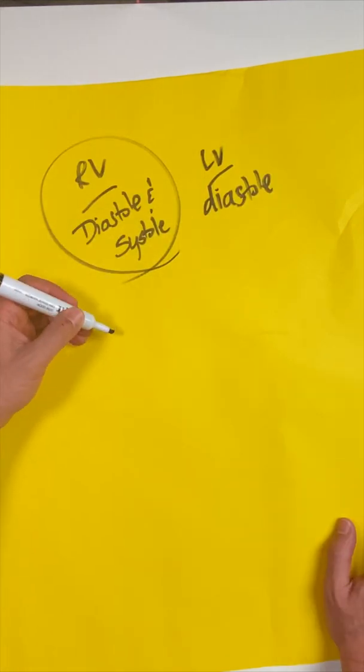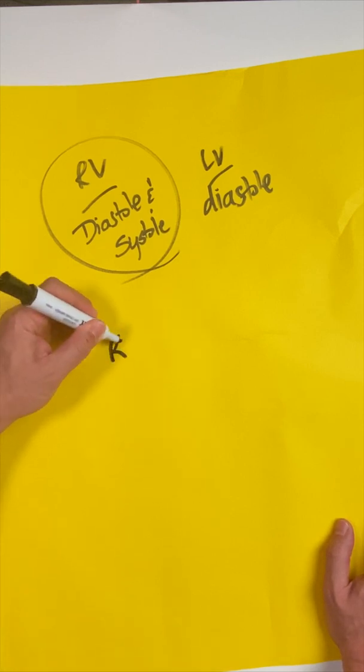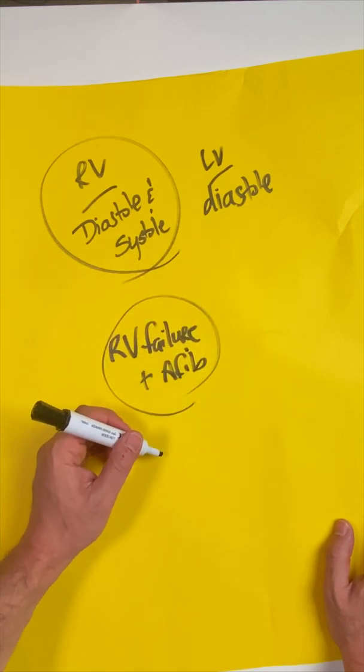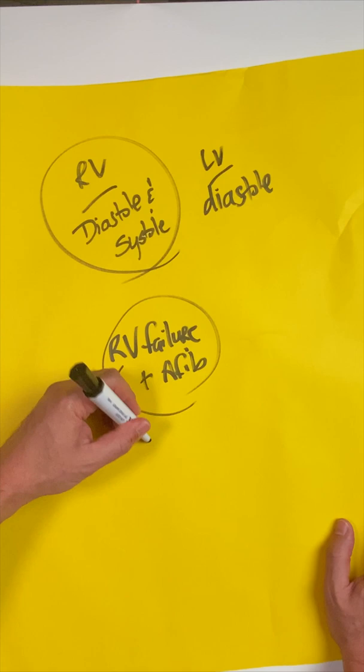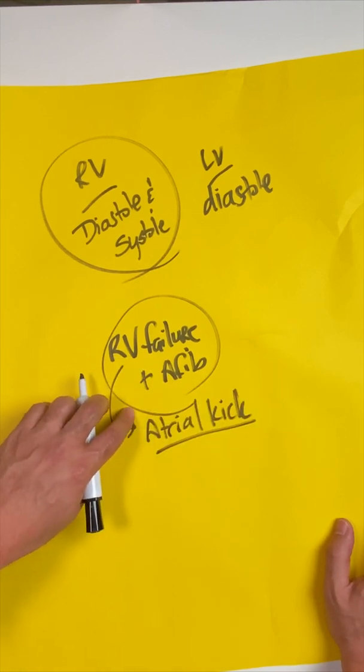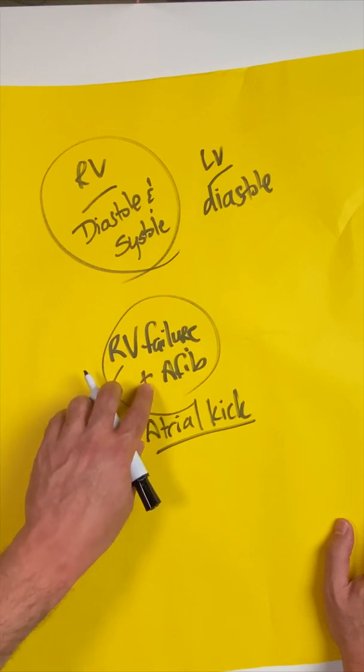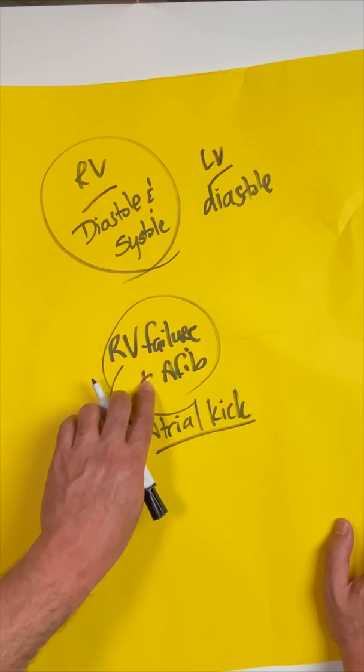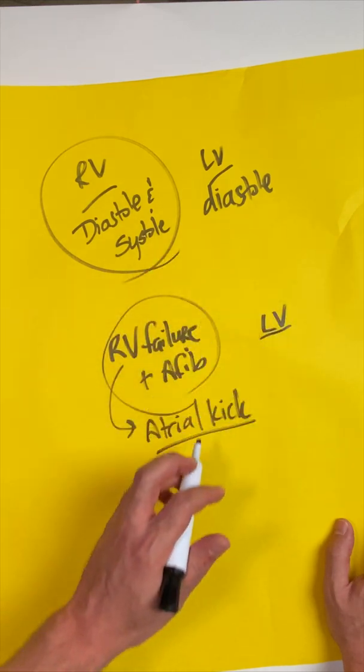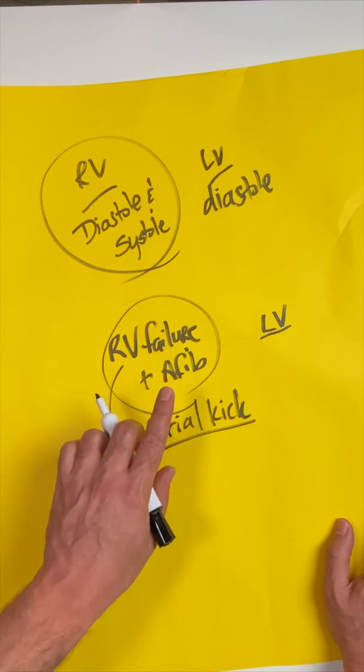The other fun fact to know about the right ventricle is that it doesn't tolerate atrial fibrillation very well. So if you have right ventricular failure and you have AFib, this can greatly compromise the hemodynamics because the right ventricle really likes that atrial kick. If you have somebody who comes in and they have right ventricular failure and they're in atrial fibrillation, cardioverting them immediately may help to resuscitate them. This is much different than the left ventricle where we can tolerate AFib for certain periods of time. The RV is really sensitive and that right side circulation needs that atrial kick.